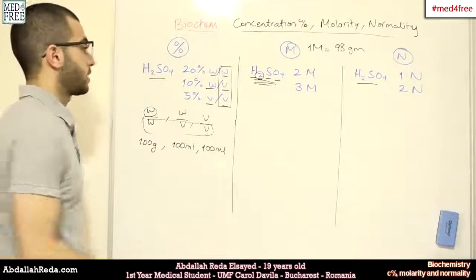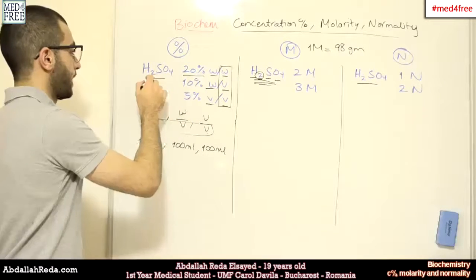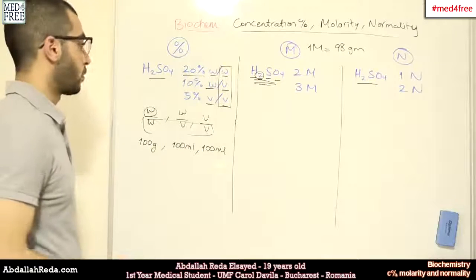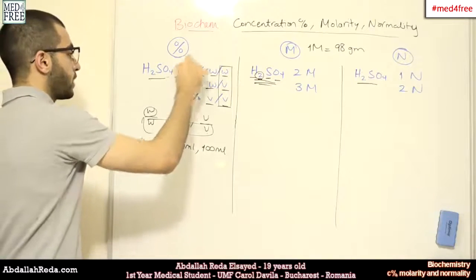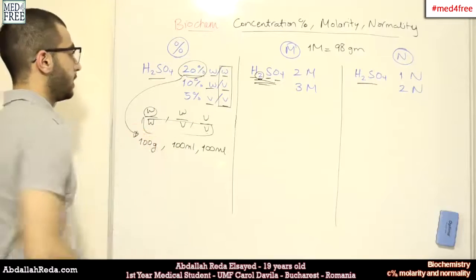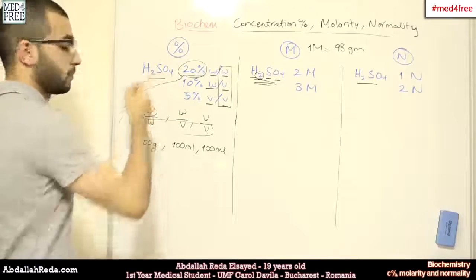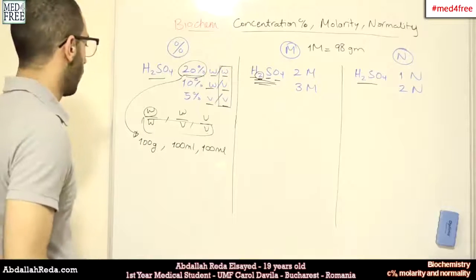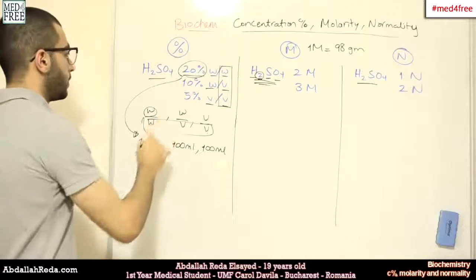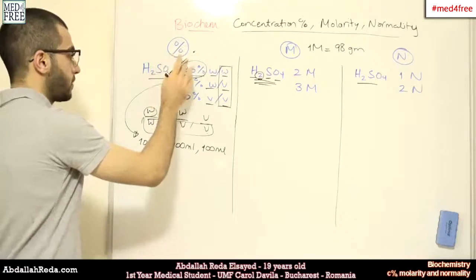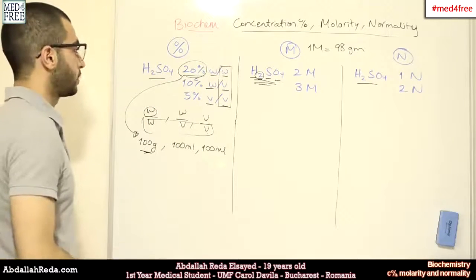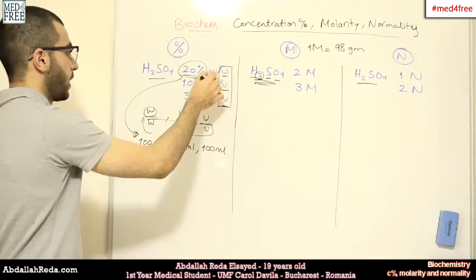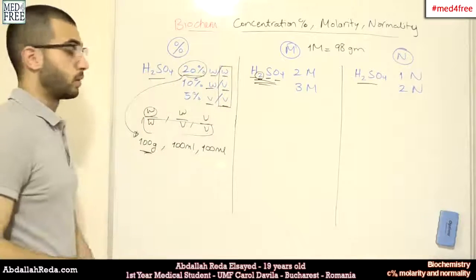We have a solution that's 20% sulfuric acid, 20% weight per weight. Well, this means that 20% of the 100 grams is actually sulfuric acid. So, this means that there are 20 grams in these 100 grams of the whole solution. And this makes up a 20% weight per weight sulfuric acid solution.